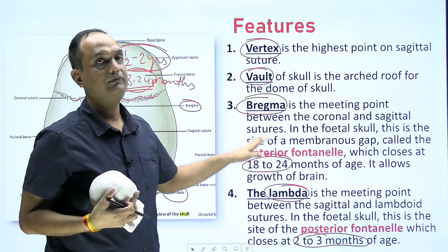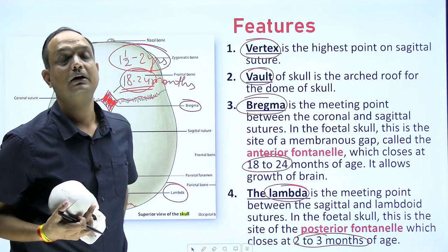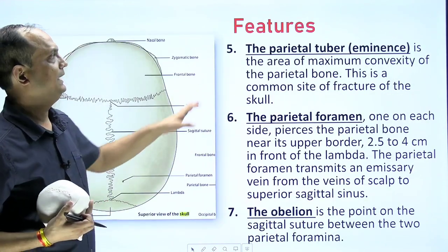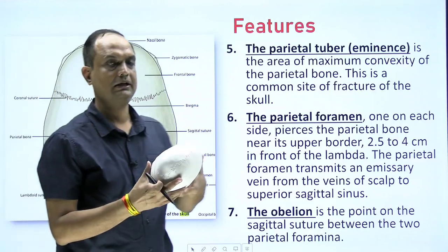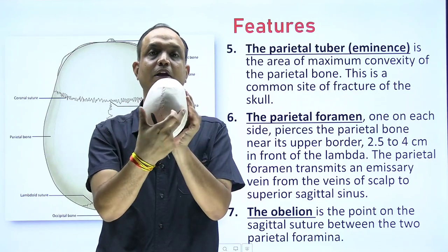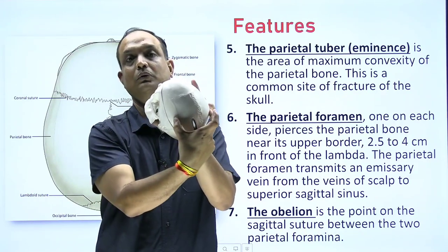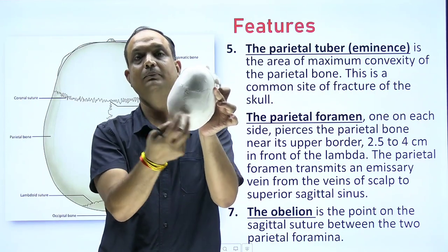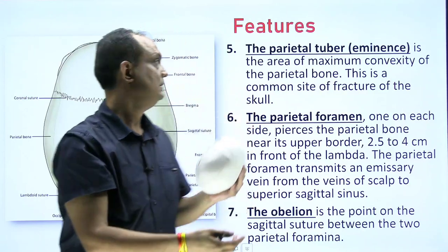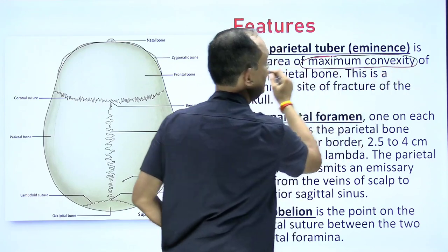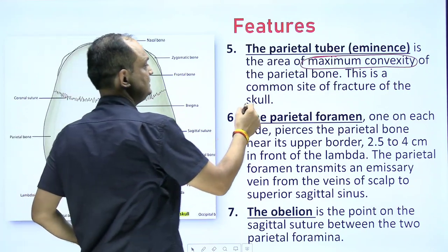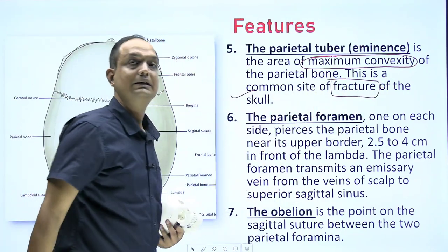So these are three important features: bregma, lambda, and vertex. The next feature is parietal eminence. When you see the norma verticalis from the superior view, you will find the most prominent points on your parietal bone. These highly prominent points are known as parietal eminence, and they are the common site of fracture in the skull bone.